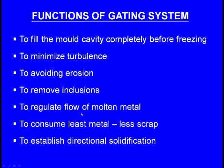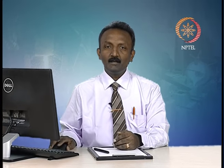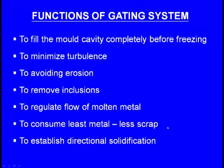The fifth function is to regulate the flow of molten metal — the speed should be optimum, not too fast and not too slow. The sixth function is to consume least metal, so that there will be less scrap. The gating system should use the minimum quantity of liquid metal.